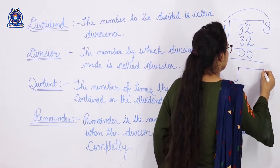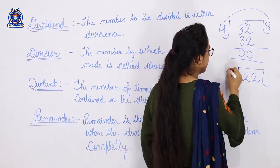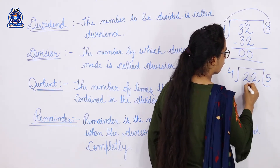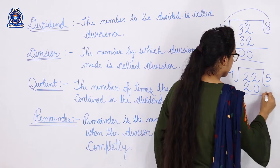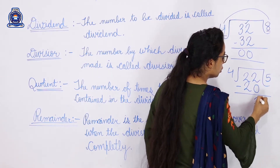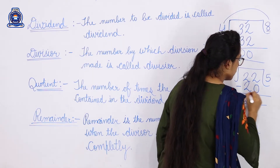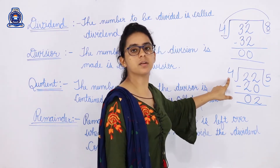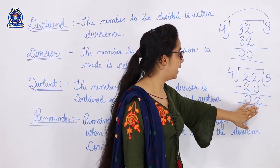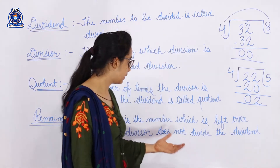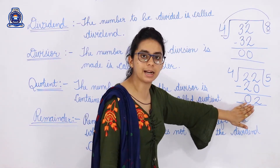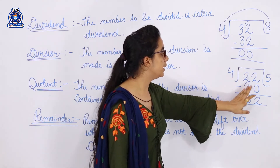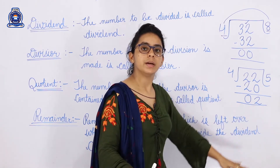Let's take another example: 22 divided by 4. We divide 22 by 4. 4 fives are 20, so we write 5 as quotient. Then we subtract: 2 minus 0 is 2, 2 minus 2 is 0. So here: 22 is the dividend, 4 is the divisor, 5 is the quotient, and 2 is the remainder. The remainder is the leftover number when the divisor does not divide completely.